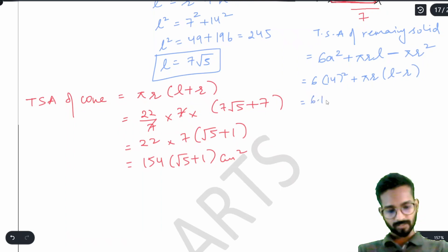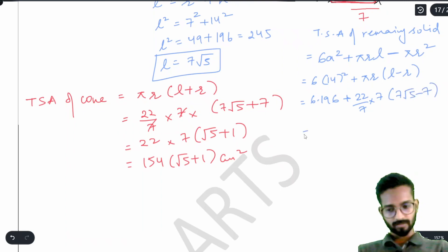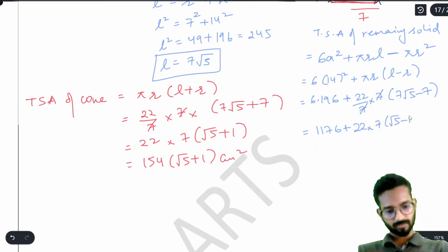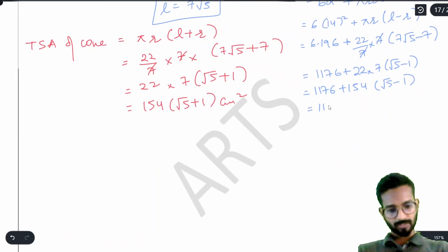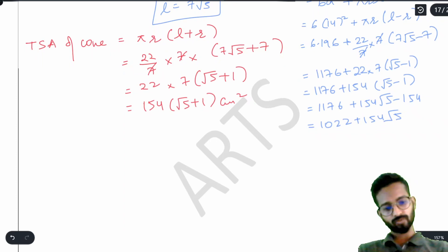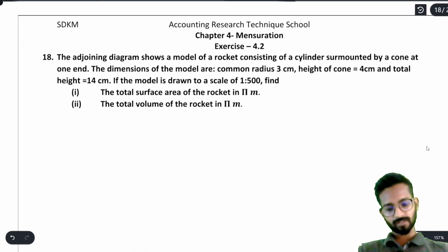Solving: 1176 + 22 × 7 × (√5 − 1) = 1176 + 154(√5 − 1) = 1176 + 154√5 − 154 = 1022 + 154√5 cm². This is the total surface area of the remaining solid. Remember to include the unit cm². Now moving to question number 18.